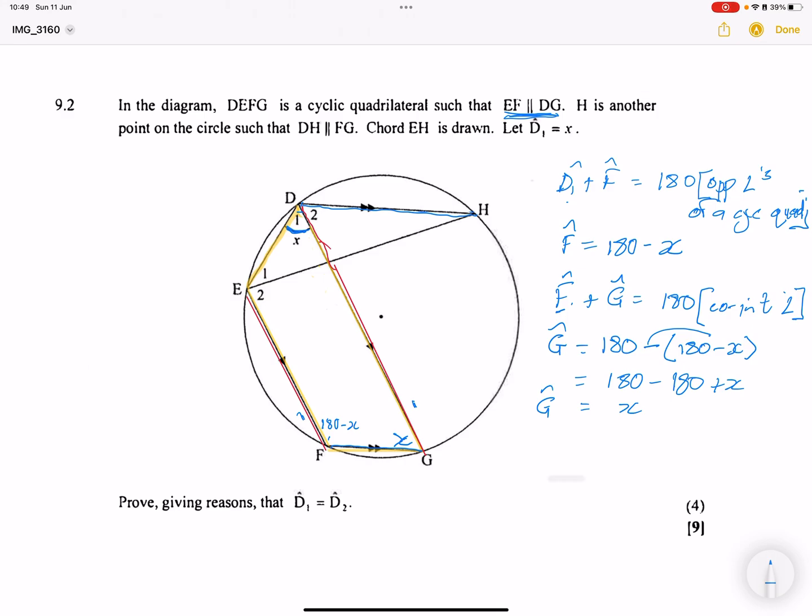So now, angle G is equal to angle D2, which is equal to X. But why is that? They are alternating angles. Why? Because DH is parallel to FG. So there is that Z there. So there's our parallel lines. So that means that D2 is actually equal to angle G. So we've actually proven it.